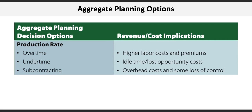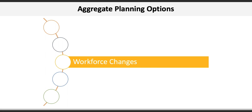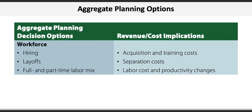Labour is often considered to be one of the most flexible and scalable productive resources. A firm's workforce can be expanded through hiring and reduced through layoffs, and firms often seek to mix both full-time and part-time labour to manage costs. Implications here are mainly on the cost side and may include acquisition and training costs for new hires, separation costs for laid-off employees, and labour costs and productivity changes.